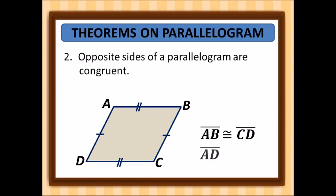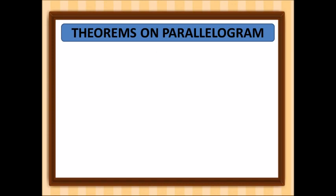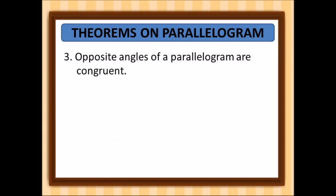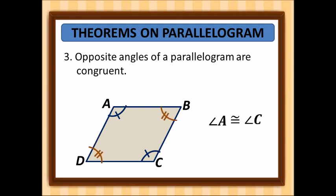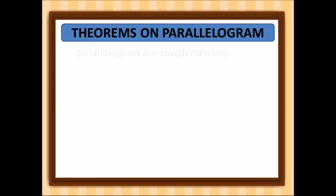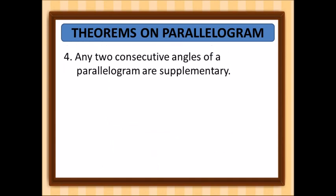Number three: opposite angles of a parallelogram are congruent. So angle A is congruent to angle C, and angle B is congruent to angle D. Number four: any two consecutive angles of a parallelogram are supplementary.